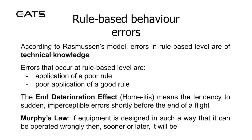Home-itis means the tendency toward sudden imperceptible errors shortly before the end of a flight. Murphy's law states that if equipment is designed in such a way that it can be operated wrongly, then sooner or later it will be.